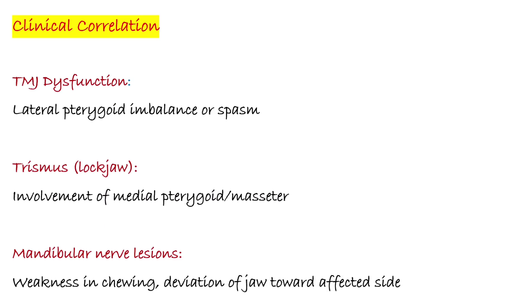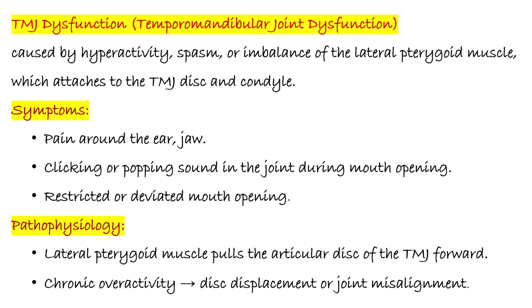Clinical correlations of muscles of mastication. TMJ dysfunction, trismus, lock jaw, and mandibular nerve lesions. Temporomandibular joint dysfunction is caused by hyperactivity, spasm, or imbalance of the lateral pterygoid muscle, which attaches to the TMJ disc and condyle. Symptoms include pain around the ear and jaw, clicking or popping sounds in the joint during mouth opening, and restricted or deviated mouth opening. Pathophysiology: the lateral pterygoid muscle pulls the articular disc of the TMJ forward; chronic overactivity leads to disc displacement or joint misalignment.